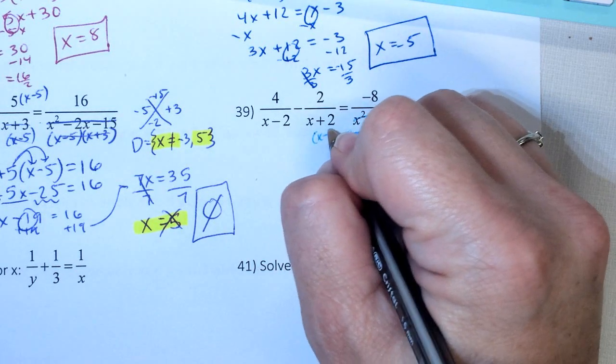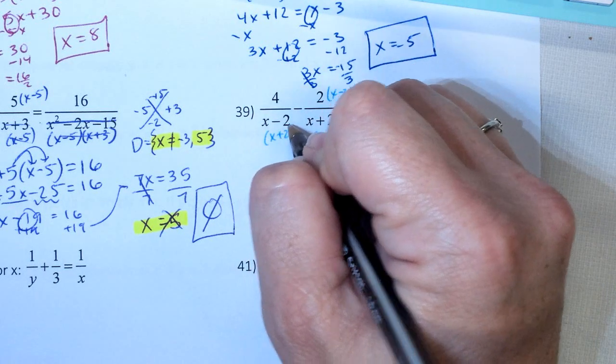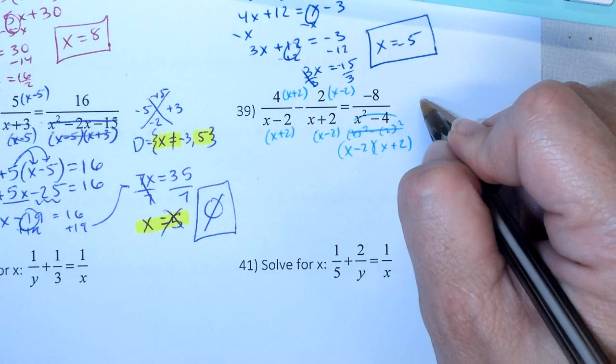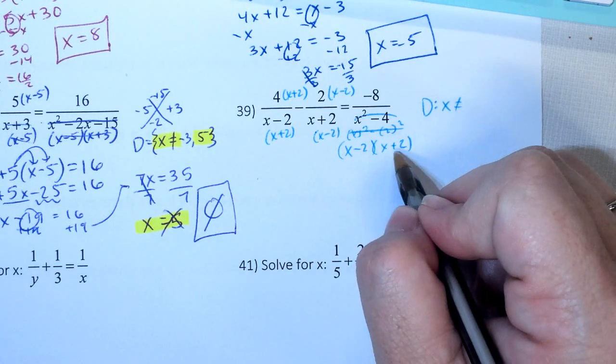Well, this has the x plus 2, needs the x minus 2. This has the x minus 2, needs the x plus 2. And now all my denominators are the same. But before I keep going, I know my domain. x cannot equal negative 2 and positive 2.